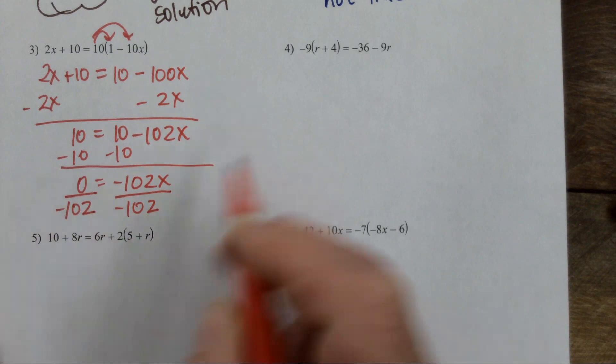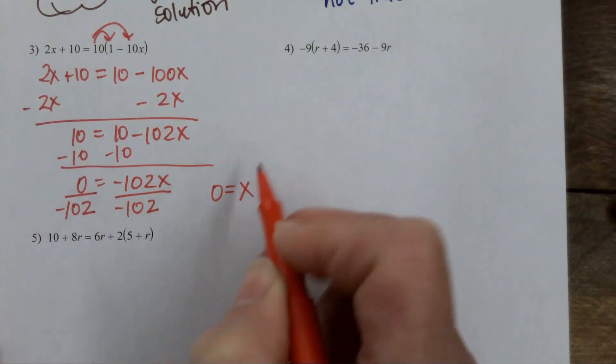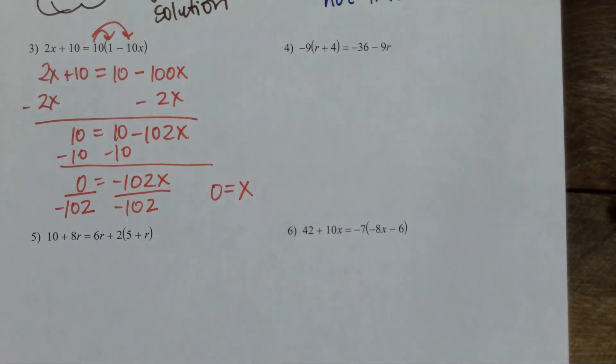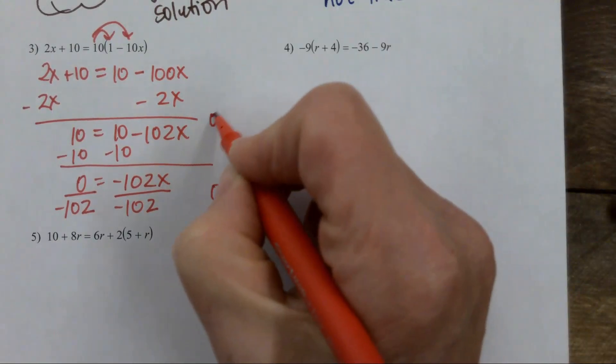I'll end up with 0 equals x. Now a lot of people get to this point and they see 0 equals negative 102x and they automatically think that must be a no solution. It's like your brain tells you that 0 can't equal negative 102x, but it is one solution, because if there is an x still involved, then I can still solve for it. The only time that a no solution or a many solutions is going to happen is if all of the variables disappear. So this is a one solution situation.